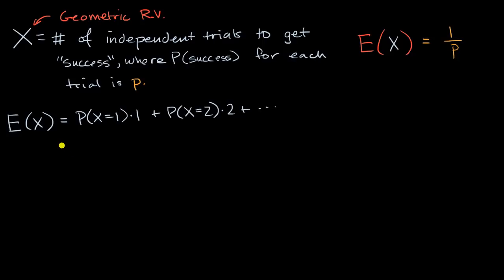What is this going to be equal to? The probability that we have a success on our first trial is going to be p. What is the probability that we don't have a success on our first trial but we have one on our second trial? That is going to be one minus p — the first trial where we don't have a success — times p, a success on the second trial. Let me do a few more terms here.